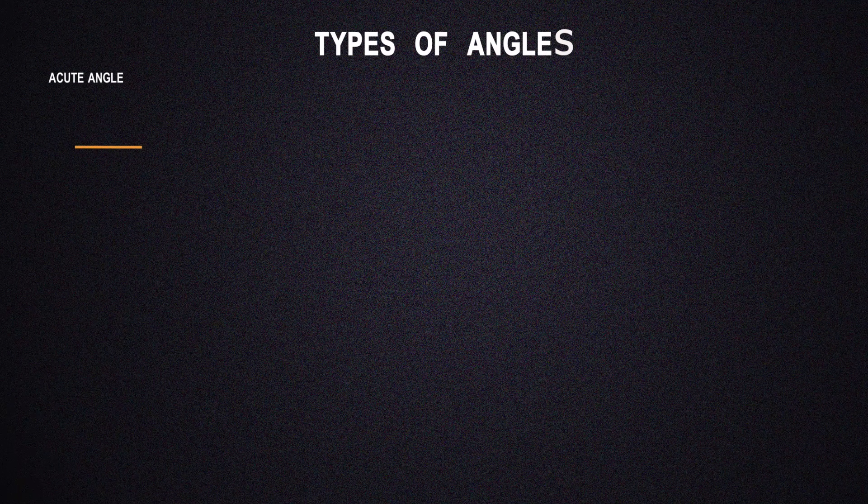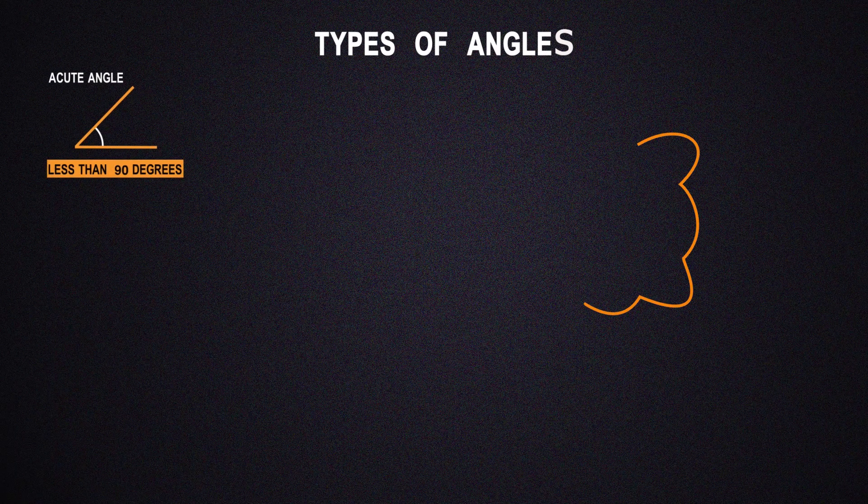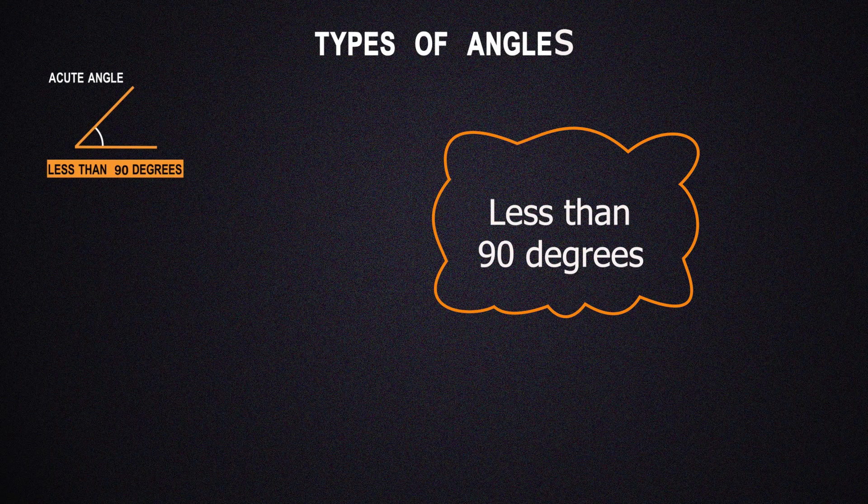Here we have an acute angle. All acute angles are angles that are less than 90 degrees. An acute angle can range from any degree from 0 to 90.